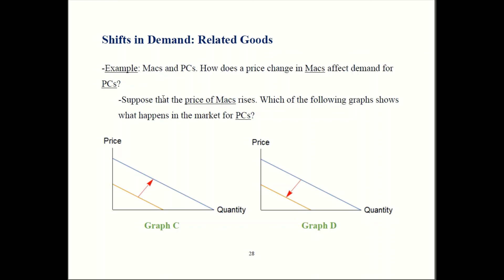That means demand for PCs should shift out. In graph C, demand is shifting out. So graph C should be the correct answer.